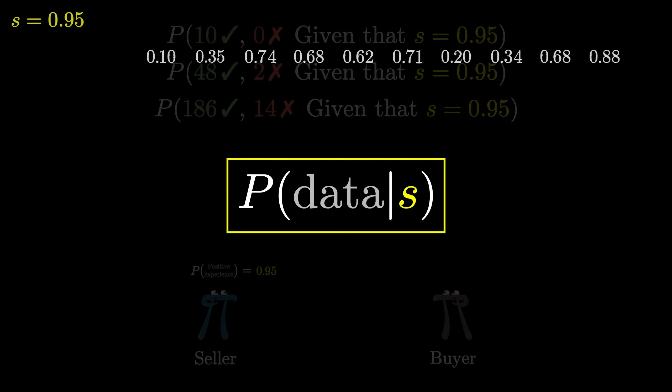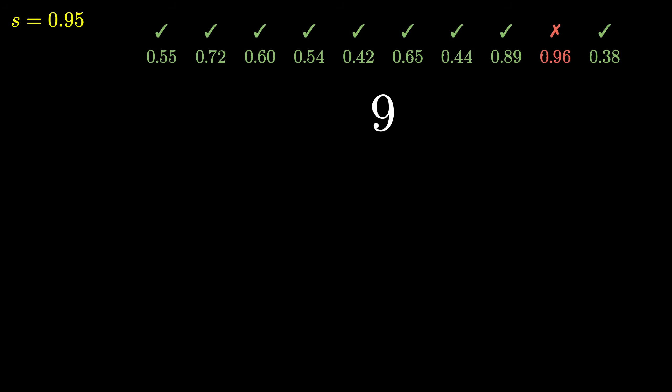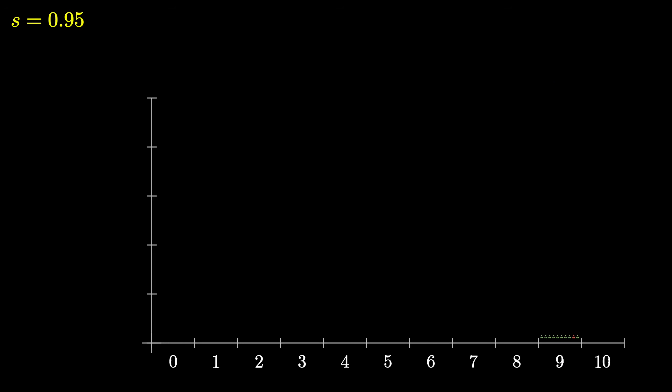A moment ago, I showed you something like this with a simulation, generating 10 random reviews. And with a little programming, you could just do that many times, building up a histogram to get some sense of what this distribution looks like.